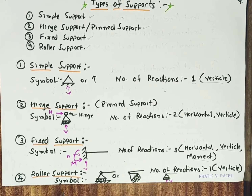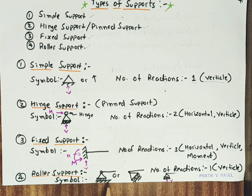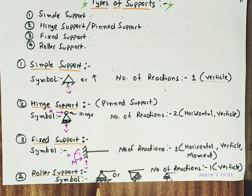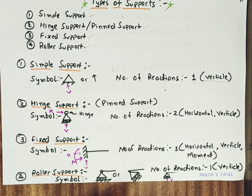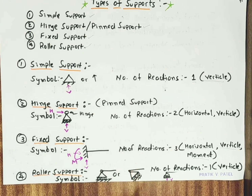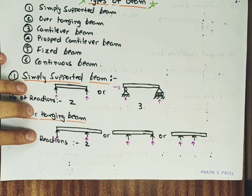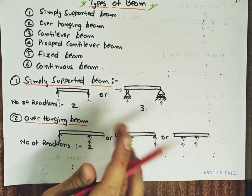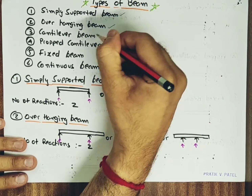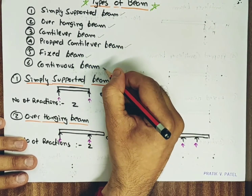For roller support, the support is provided on rollers and the end of the beam can move along the rollers. Only a vertical reaction is provided. This type of support is used for bridge girders to allow free expansion and contraction of length. The number of reactions is 1, which is vertical. Our next topic is types of beam. The types of beam which any structure can have are: simply supported beam, overhanging beam, cantilever beam, propped cantilever beam, fixed beam, and continuous beam.